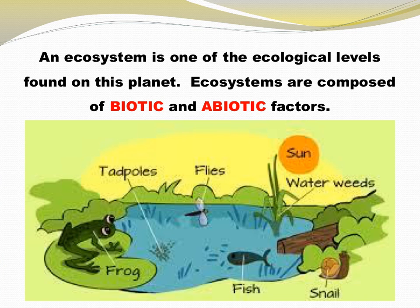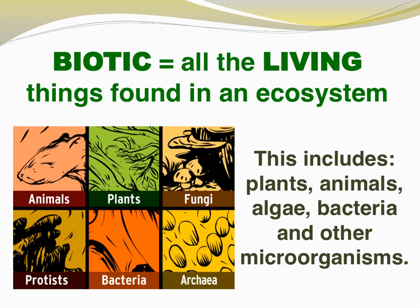An ecosystem is one of those levels we just discussed. Ecosystems are composed of the biotic and the abiotic factors found there. Biotic factors are all the living things found in an ecosystem. This includes plants, animals, algae, bacteria, and other microorganisms.